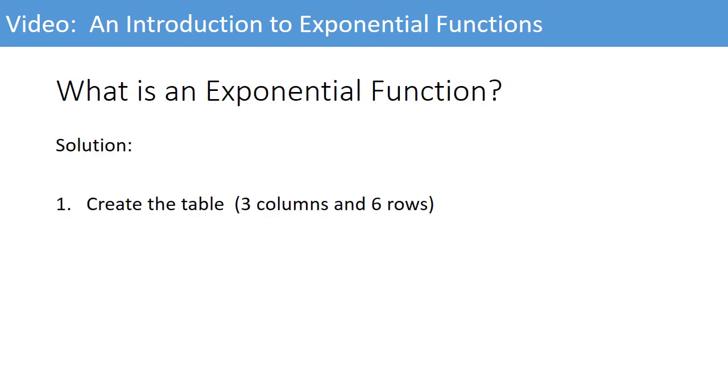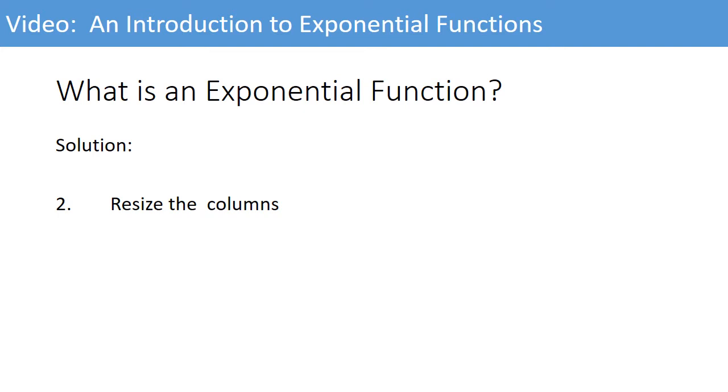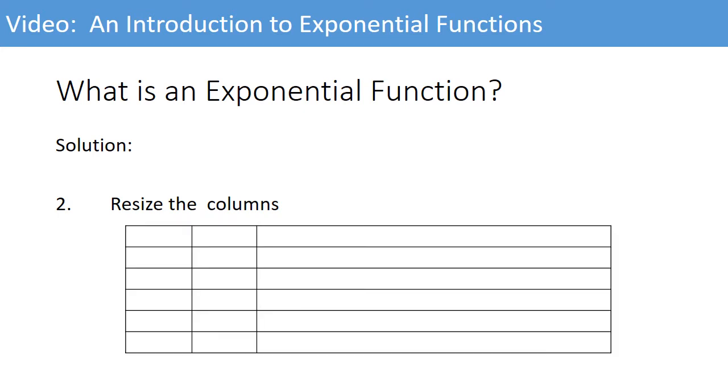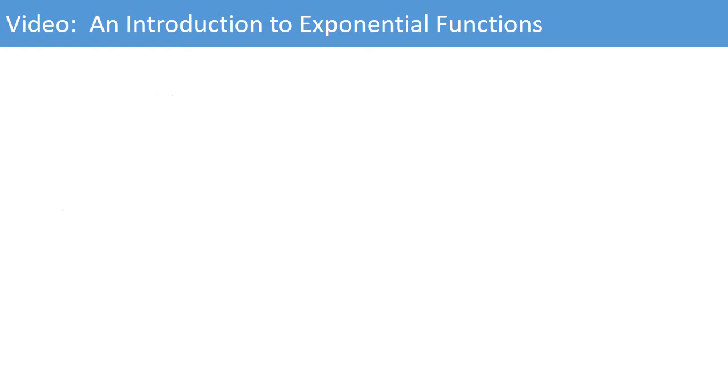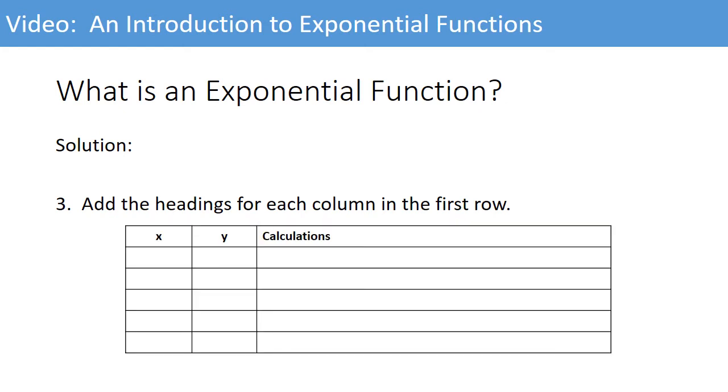Step number one: Create the table - three columns and six rows. Number two: Resize the columns. You want the x and y to be relatively small, and the third column where you are going to show calculations a little bit bigger. Number three: Add the headings for each column in the first row. The first column is x, the second column is y, and the third column is your calculations.